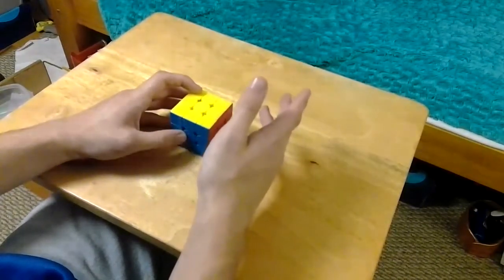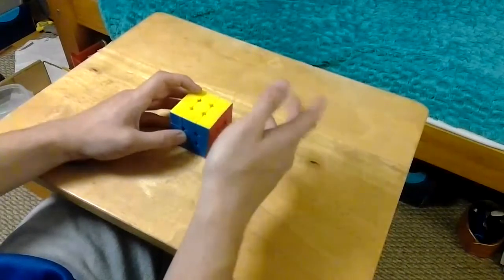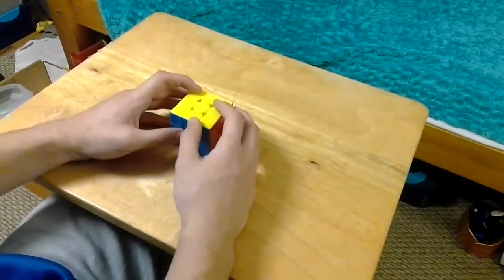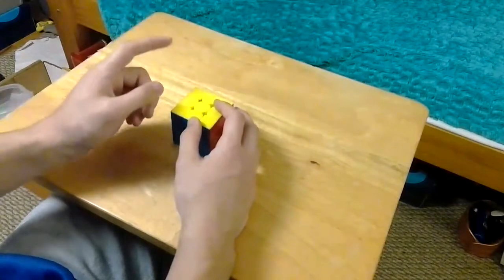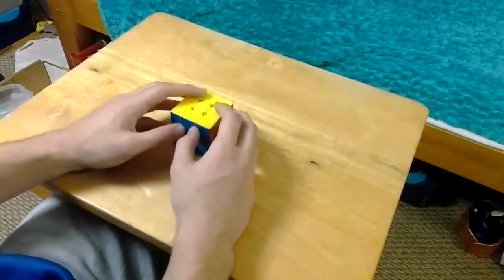You'll get a ZBLL every solve if you use a method that pre-orients edges, like ZZ, or if you use a method that doesn't pre-orient edges, like CFOP, you'll get it one out of every seven solves, so it tends to be less worth it.